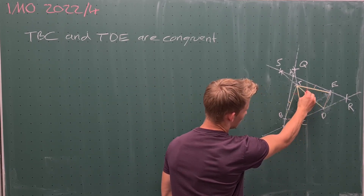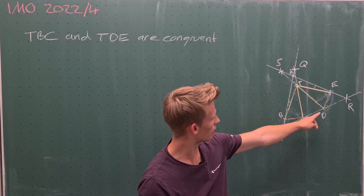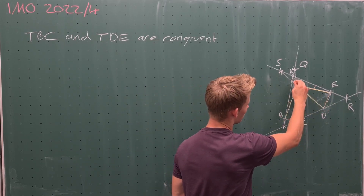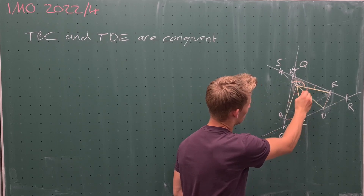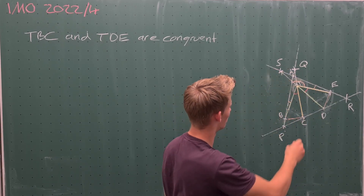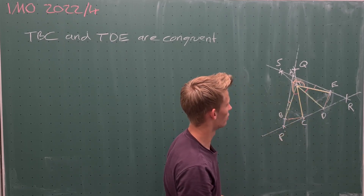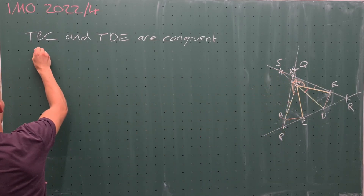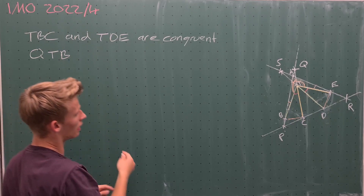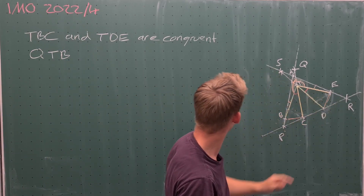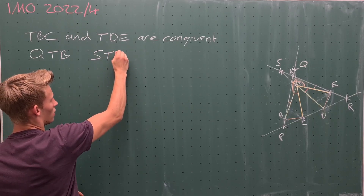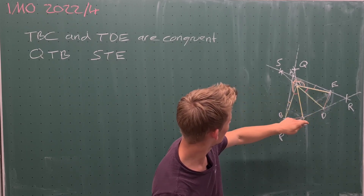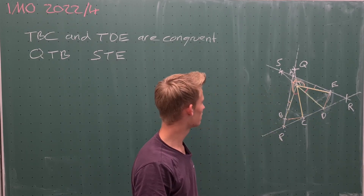Therefore we know that all angles in these two triangles have equal measure. So angle BTC is equal to angle DTE. Therefore we know that angles STE and QTB have the same measure. Now we look at triangle QTB and triangle STE, and we see that they share this angle equal and also this angle equal, which means that they are similar.